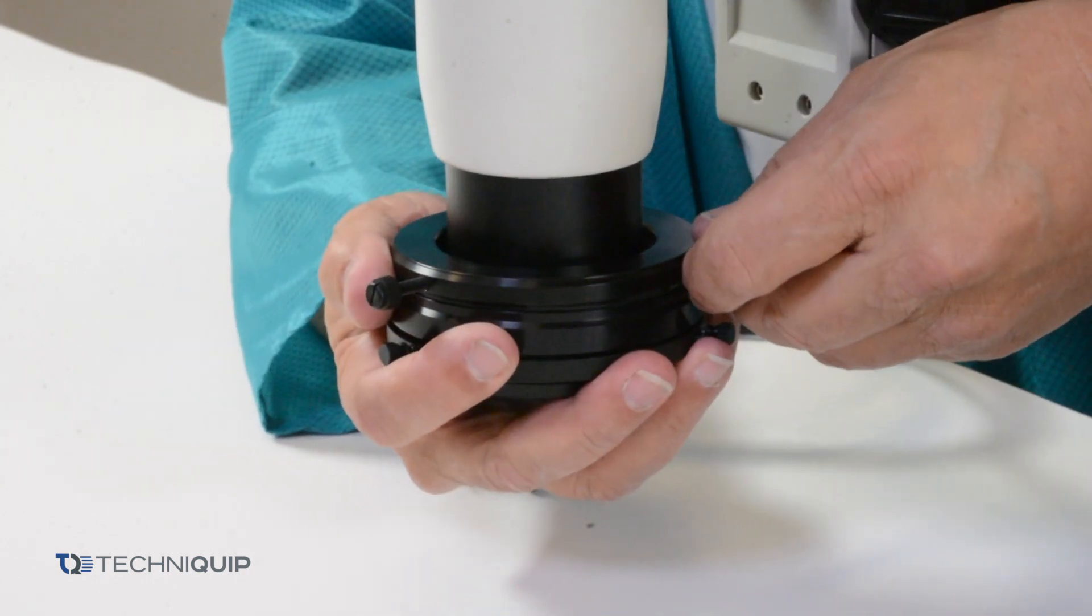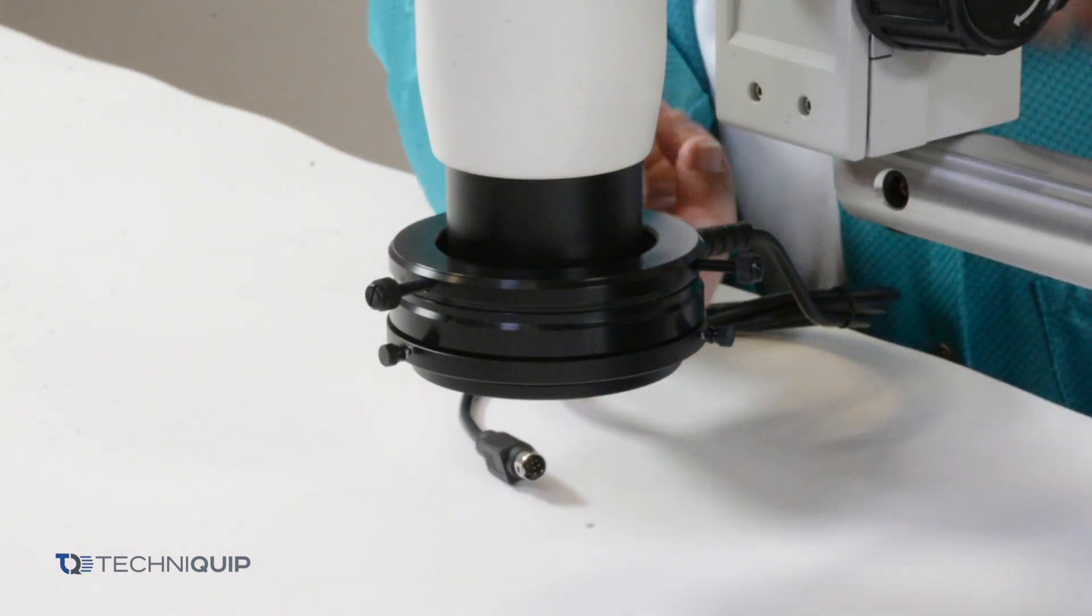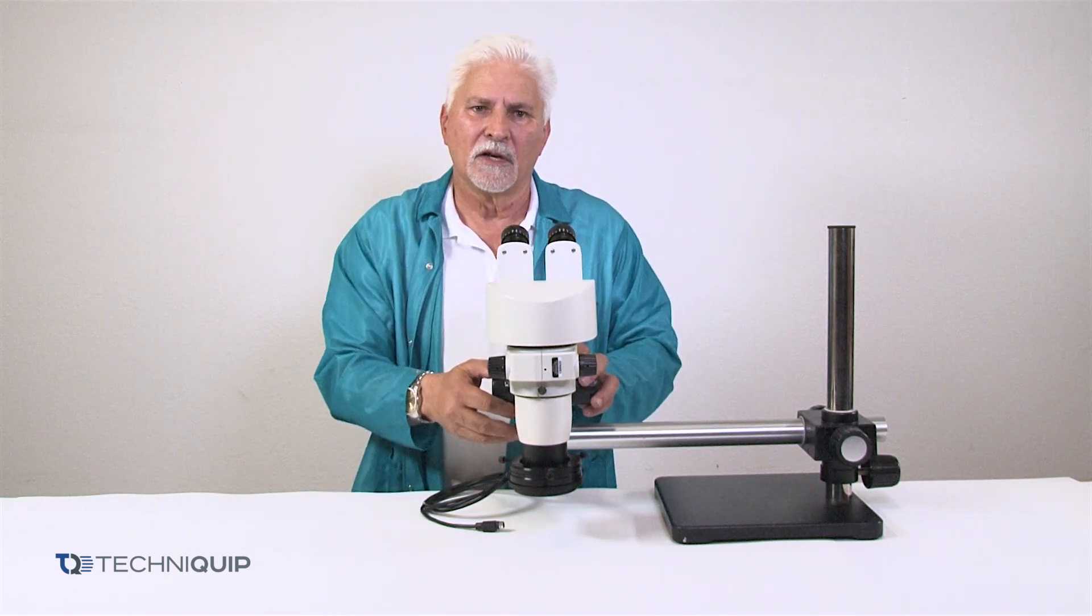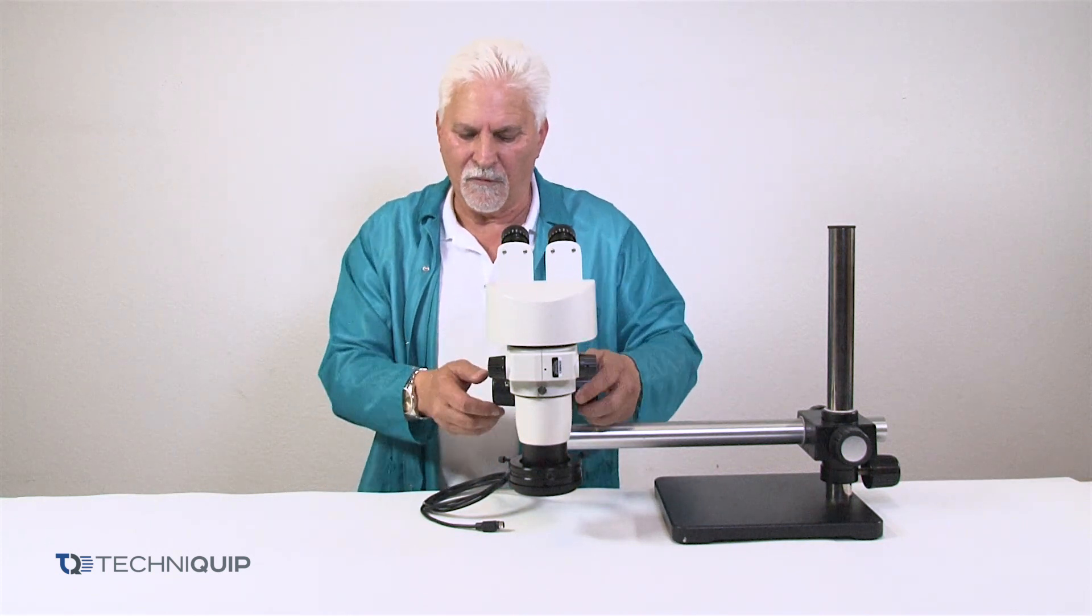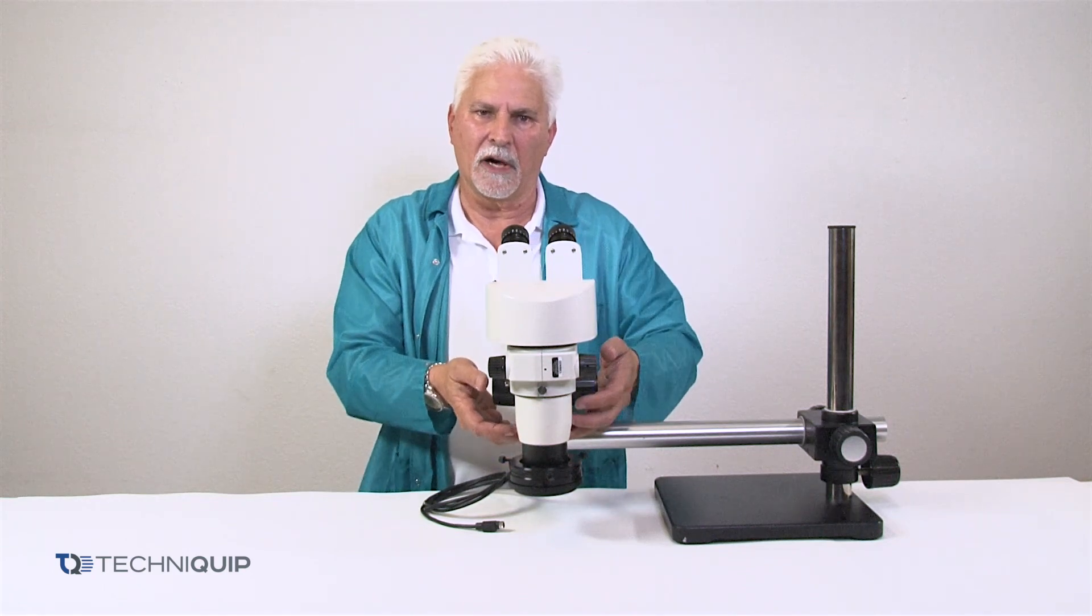Now you're going to want to make sure that you aim it so that the power connector on the back is not going to interfere with the focus mechanism. So if somebody tries to move the focus up and down, it doesn't break off when it hits part of the body here.